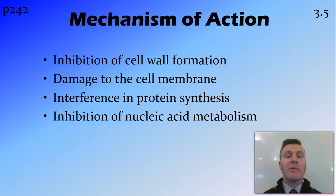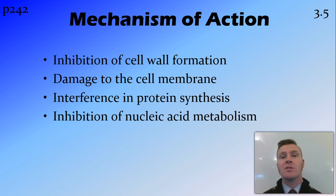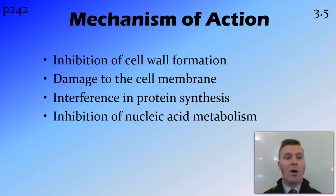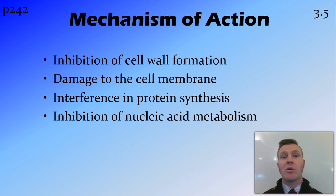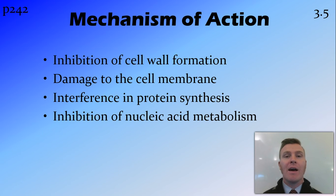The way a drug works in the body is called the mechanism of action, and there are a number of different mechanisms for antibiotics depending on their class. Some target the cell wall — inhibiting its formation during mitosis, causing the cell to pop. Another way is through damage to the cell membrane. You can also stop bacteria through interference in protein synthesis, such as erythromycin, which attacks the ribosomes and stops metabolic function. Another mechanism is inhibition of nucleic acid metabolism — affecting DNA and RNA formation, use, and replication — so the cells can't divide.